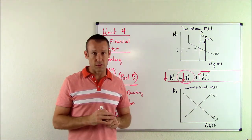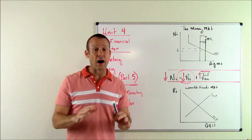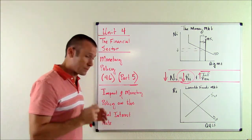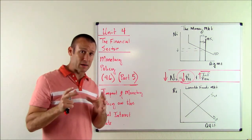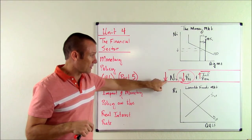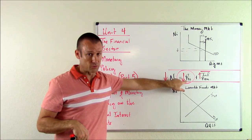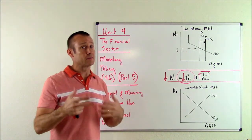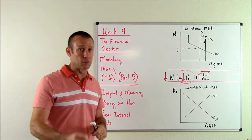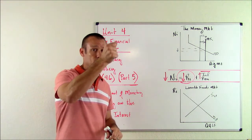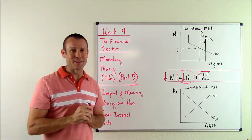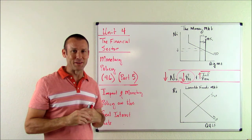Any of those ways you want to think about it, fine. Here is the takeaway: when they do easy monetary policy, the nominal interest rate goes down and the real interest rate goes down. And if they did tight monetary policy, the nominal interest rate goes up and the real interest rate goes up. Hope that made sense. We'll see you in the next video.